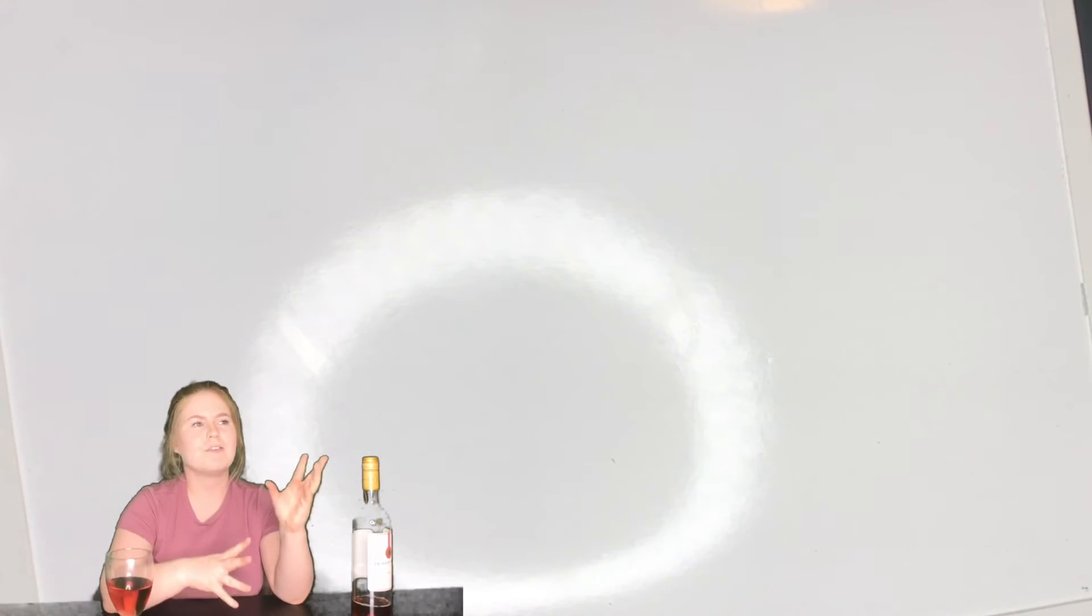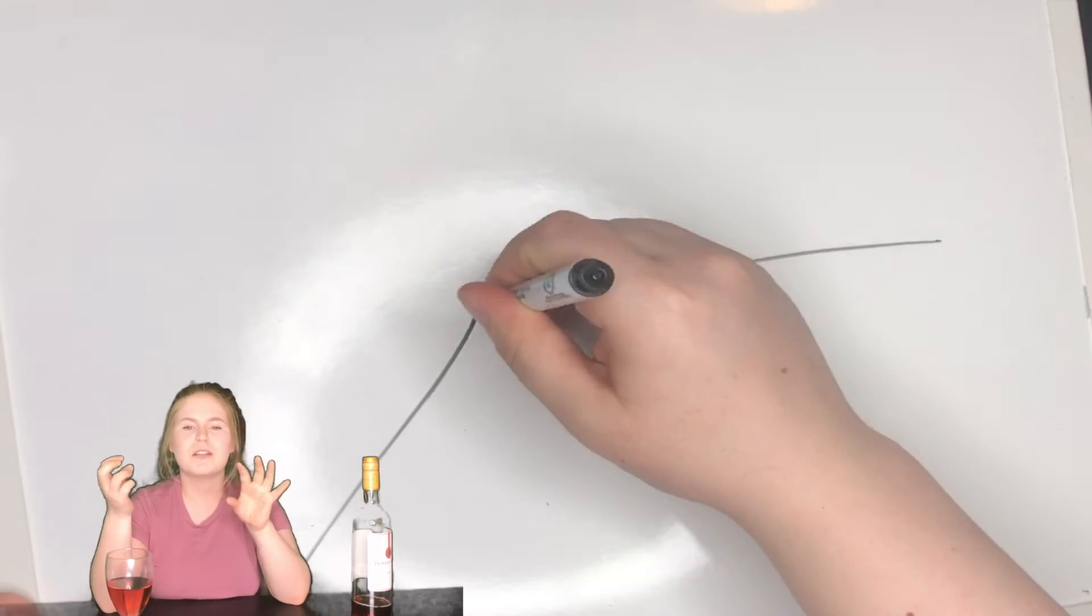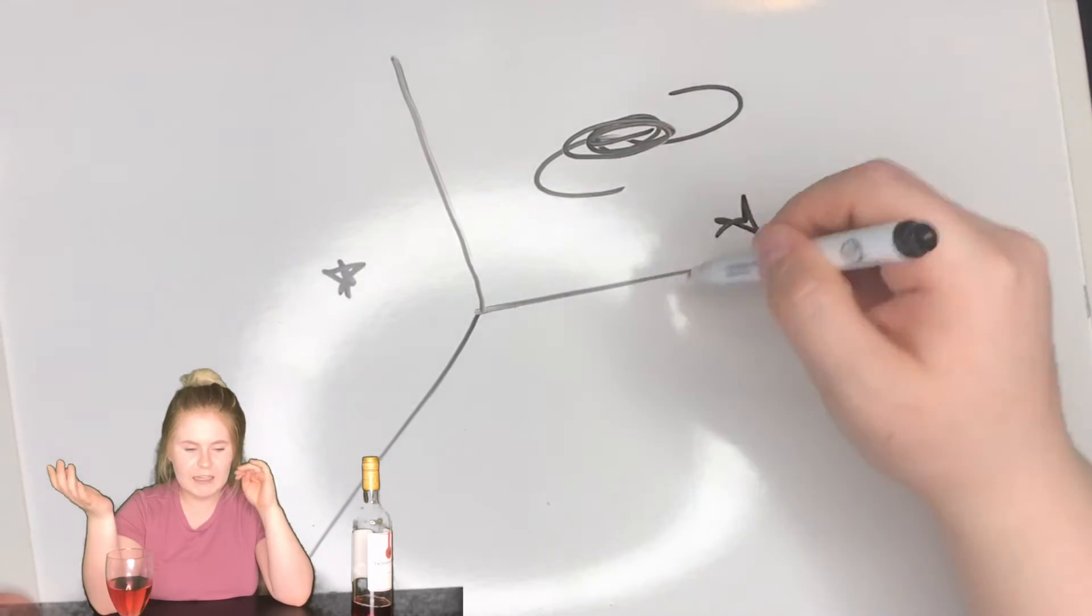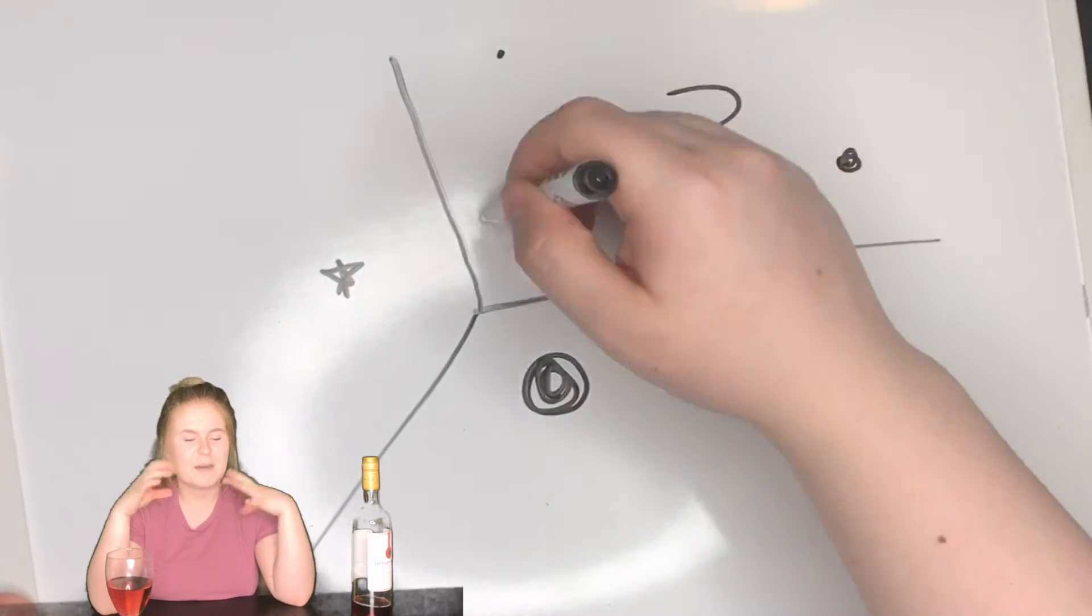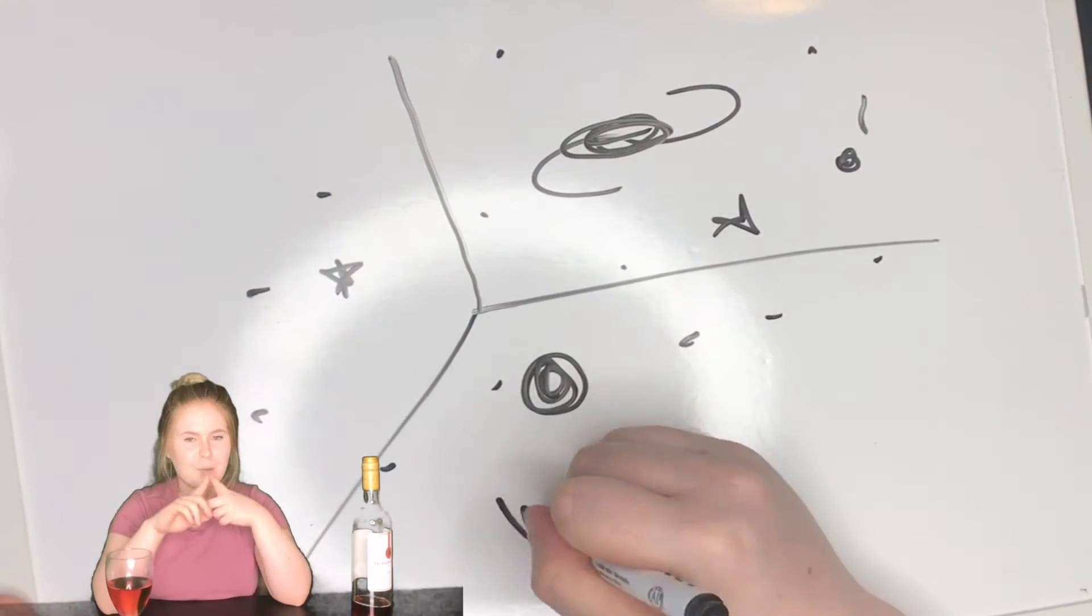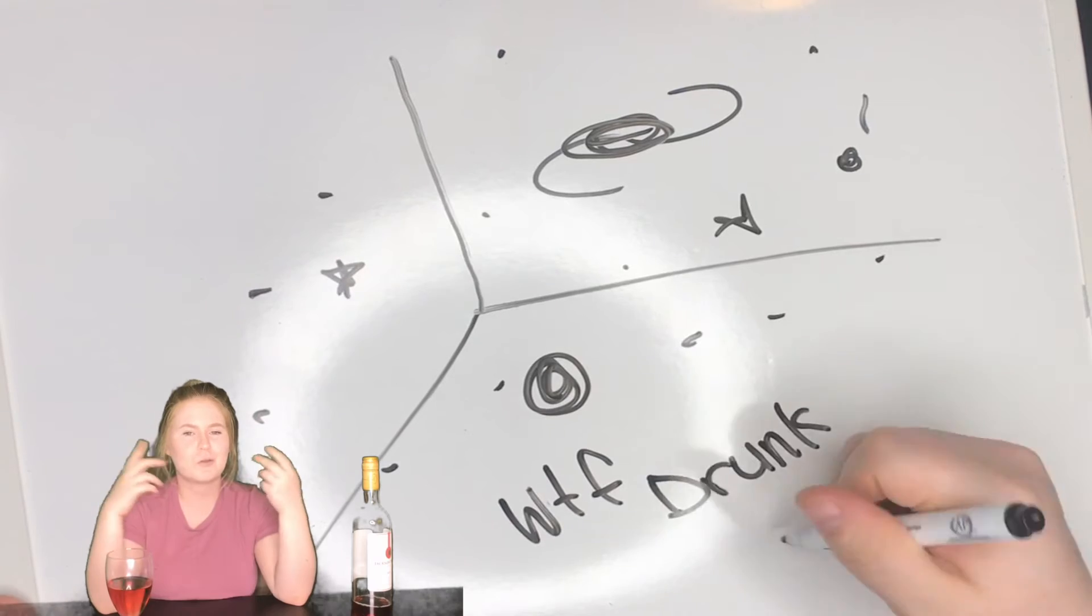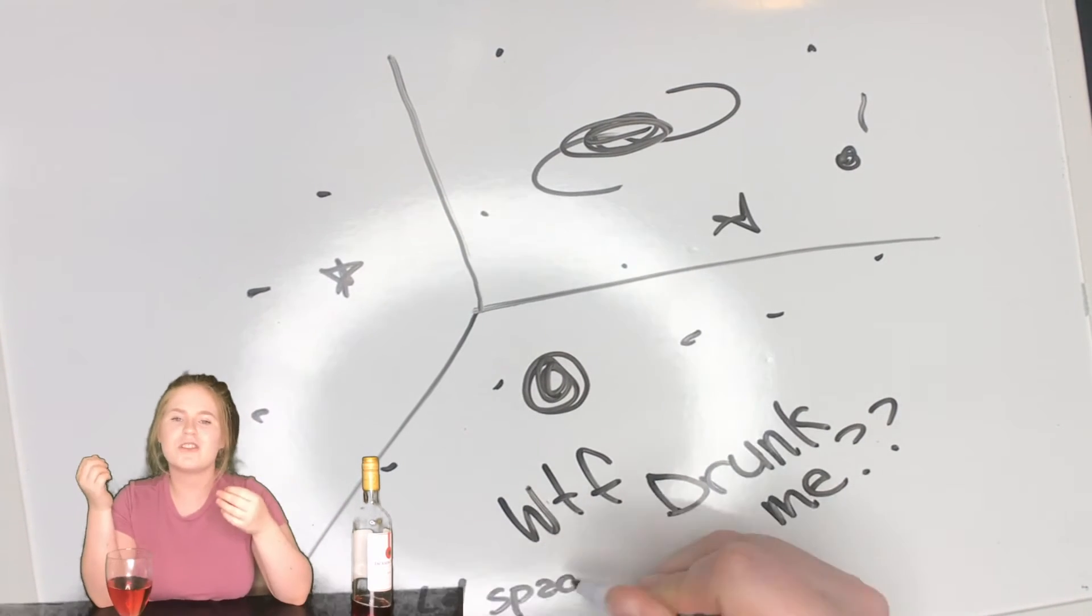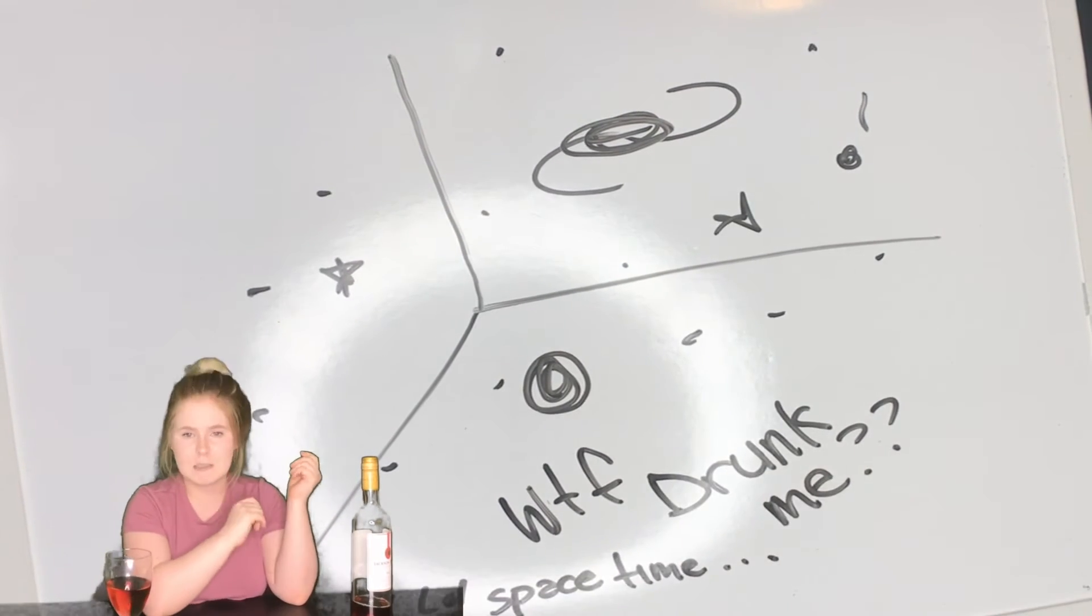Because trying to mix gravity with the quantum world, it just wasn't working. We decided to go back to the idea of pretending like protons and neutrons were cool like electrons, and how electrons are a point in space-time.